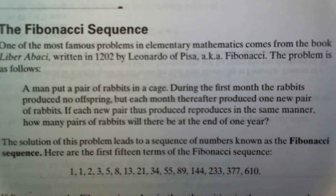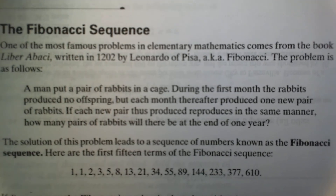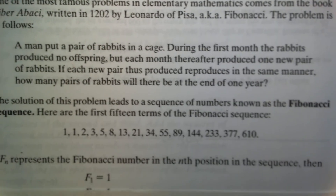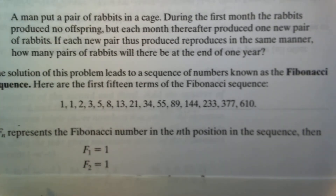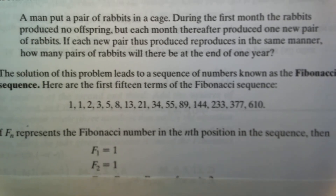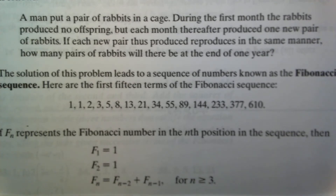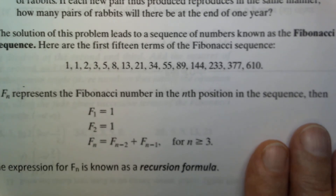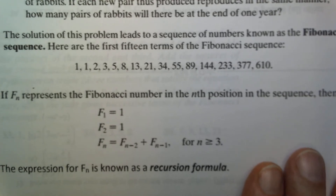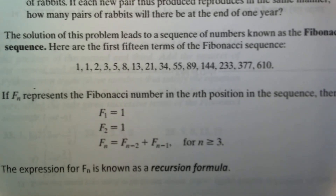Here's how this sequence comes about. If f sub n represents a Fibonacci number in the nth position in the sequence, then f sub 1 equals 1, f sub 2 equals 1, and f sub n equals f sub (n minus 2) plus f sub (n minus 1) for n greater than or equal to 3. This expression for f sub n is known as a recursion formula — it's called a recursion formula because you can compute any term from this formula if you know the previous two terms.